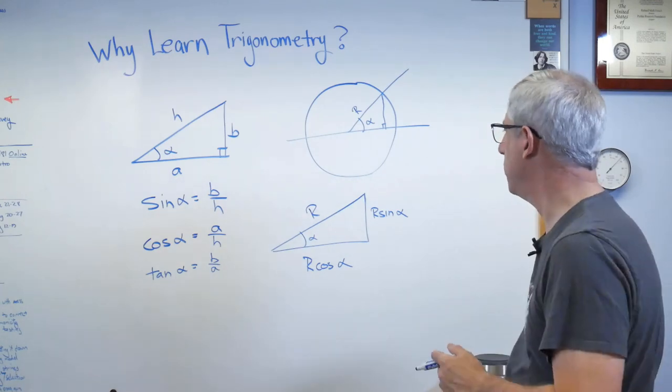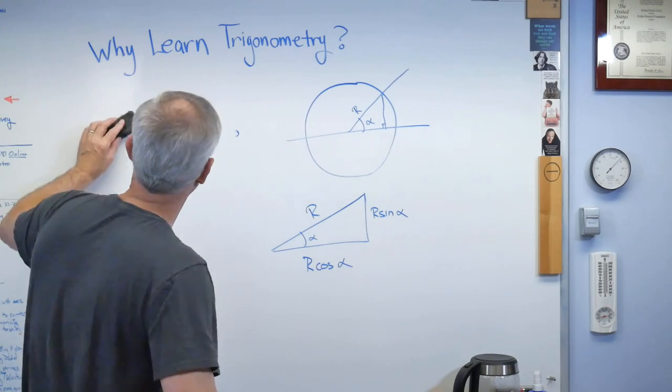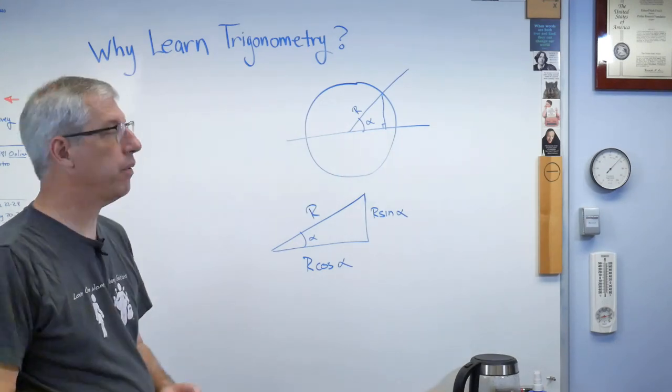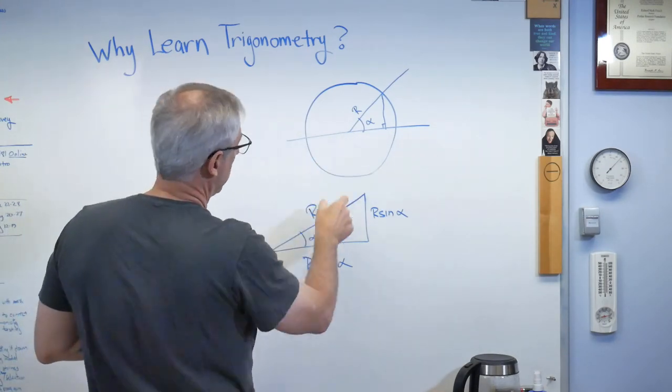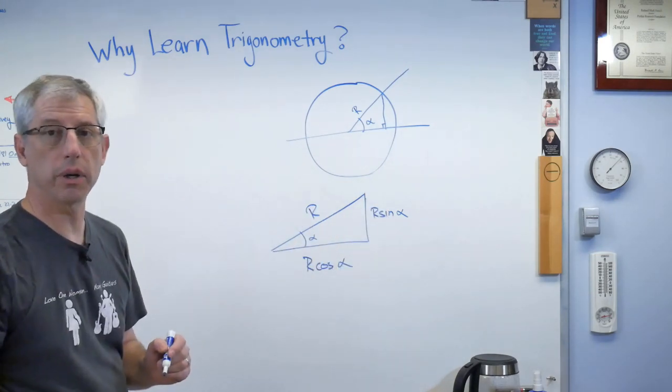Alright? So far, so good. Well, I'm going to erase this here. We also have the Pythagorean Theorem. Because this is a right triangle, that distance squared plus that distance squared has to equal that distance squared.